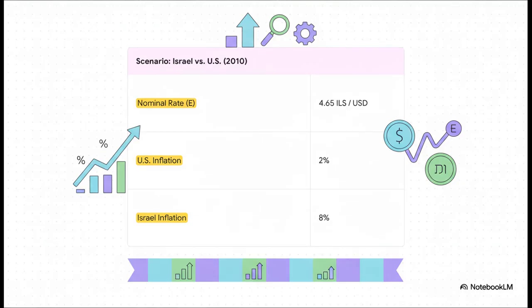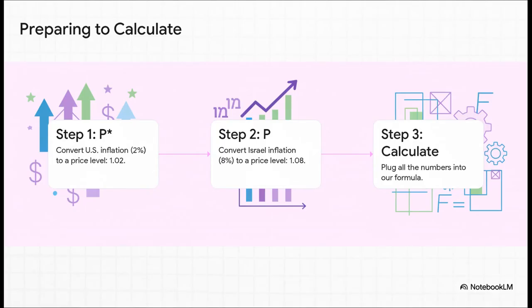Alright, check this out — here's our scenario: Israel versus the U.S. back in 2010. The nominal rate was 4.65 Israeli shekels for every one U.S. dollar. But here's the kicker: U.S. inflation was only 2%, while Israel's was way up at 8%. That difference is everything. So, before we can use our formula, we need to convert those inflation percentages into our price levels, P and P-star. Let's imagine a starting price of 1 in each country. With 2% inflation in the U.S., the foreign price level P-star becomes 1.02. And with 8% inflation in Israel, the domestic price level P becomes 1.08.